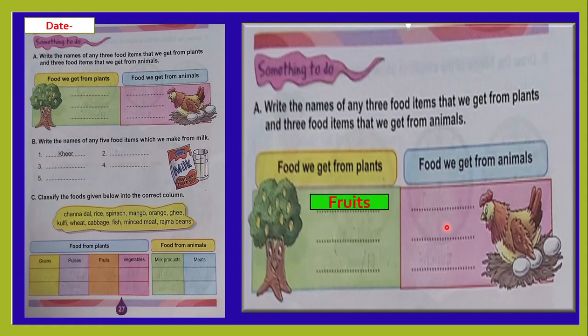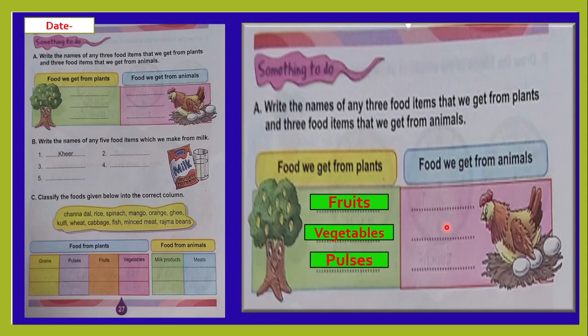We get food from plants. First is fruits, second is vegetables. But you have to write only three because there are three options. So you can write three: pulses, grains, oil, or dry fruits. You can write three: fruits, second is vegetables, and third is pulses.